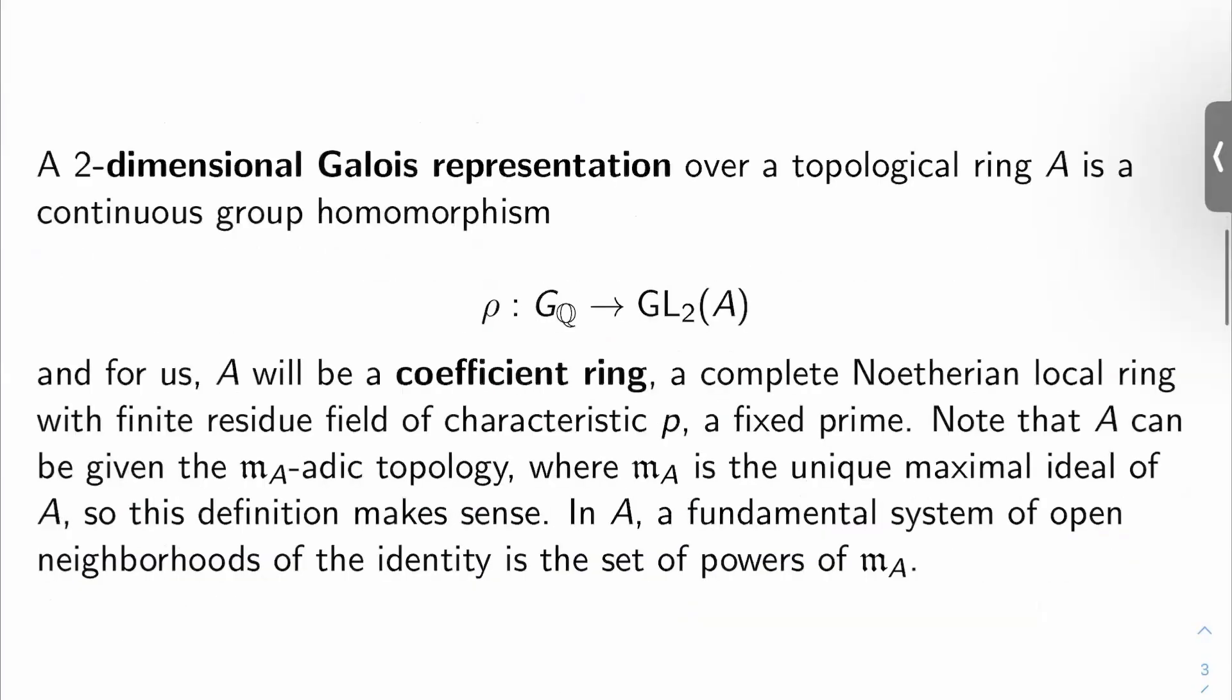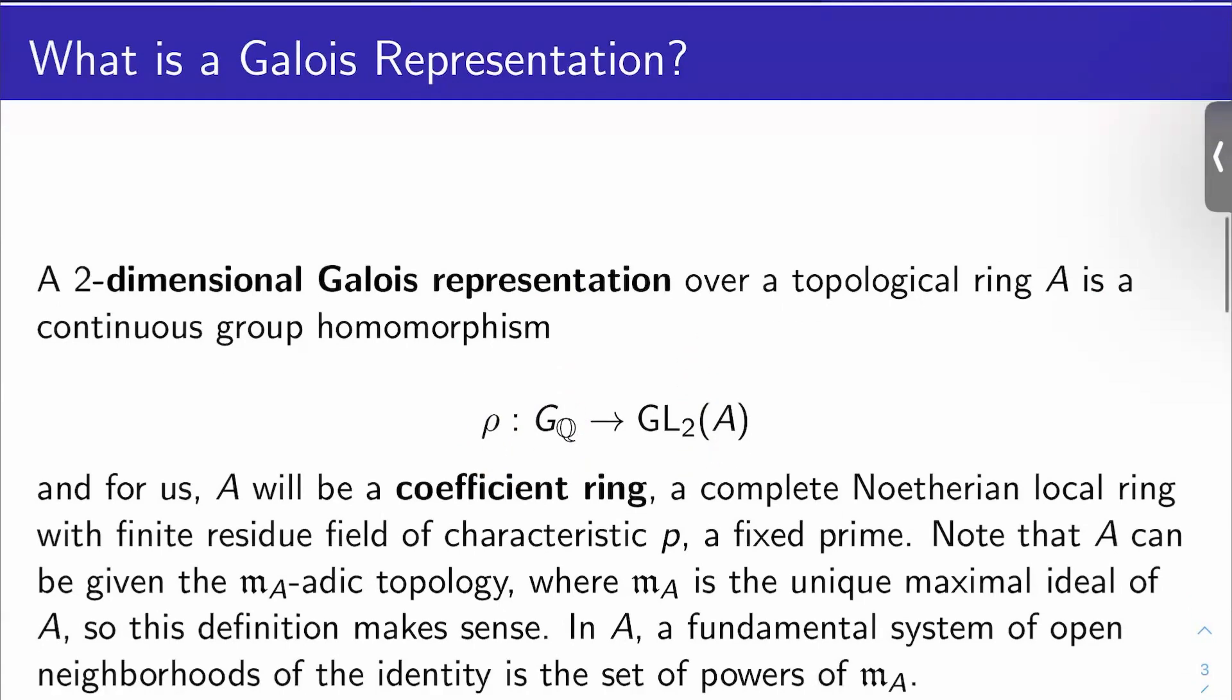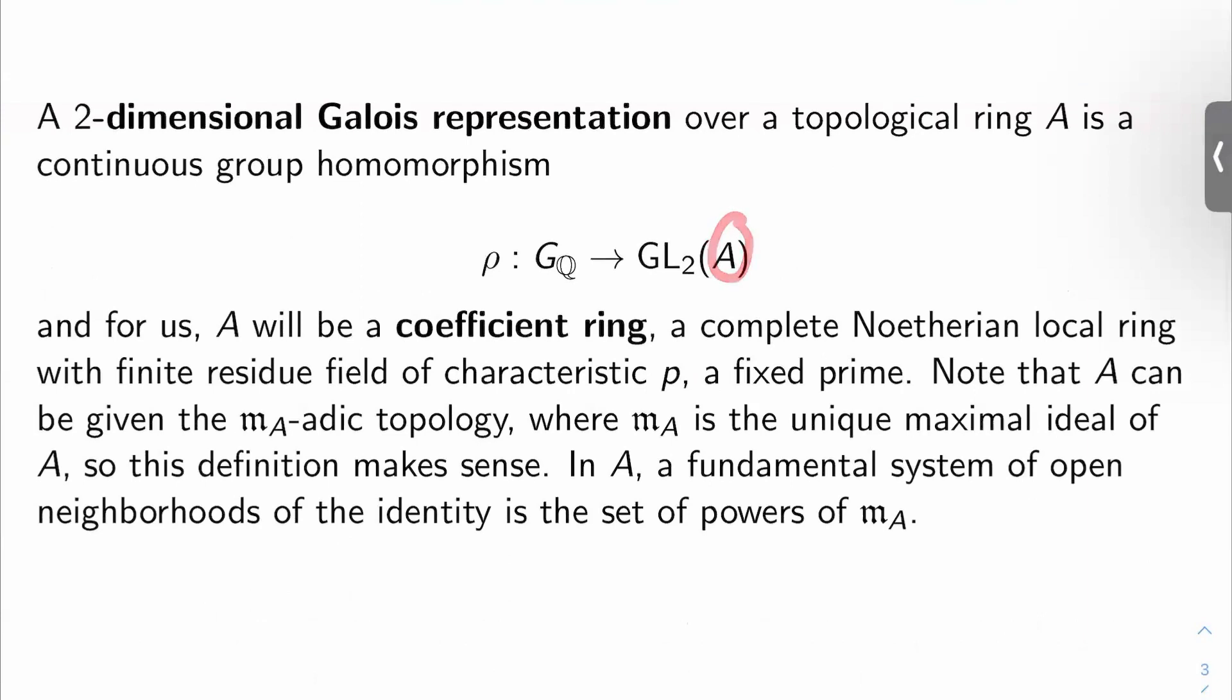So what's a Galois representation? Well, a two-dimensional Galois representation over a topological ring A is just a continuous group homomorphism rho from the Galois group of Q to GL_2(A), two by two invertible matrices with entries in A. What kind of A's will we be looking at? We'll be looking at what are called coefficient rings. So here comes adjective soup. A coefficient ring is a complete Noetherian local ring with finite residue field of characteristic p, which will be a fixed prime for us.